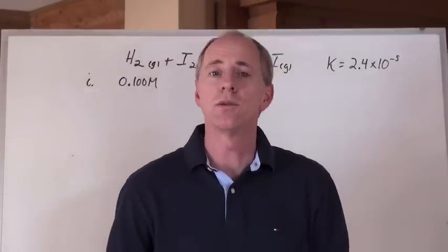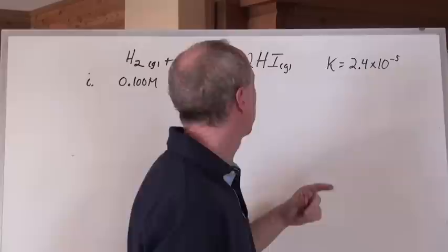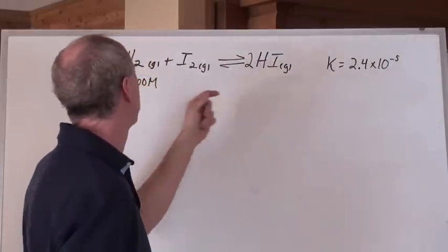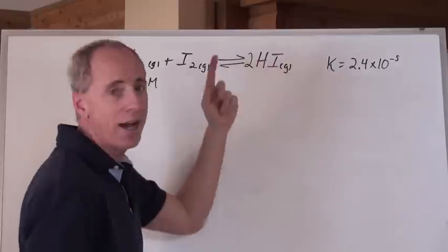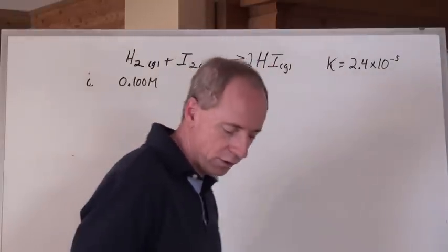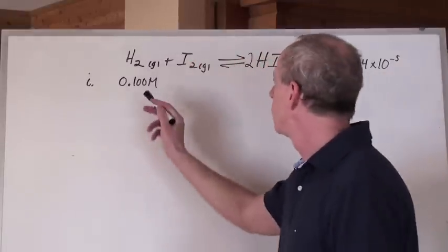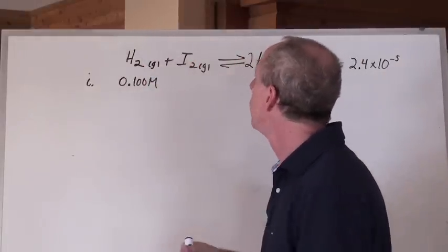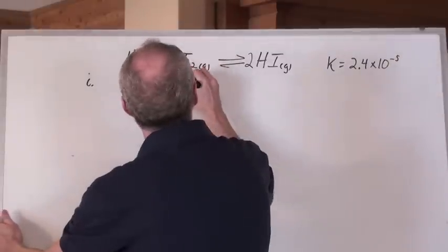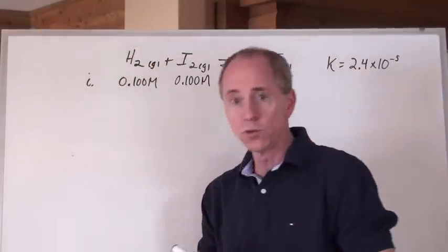So now we do a question where we already have the K value. K equals 2.4 times 10 to the negative 5 for a certain reaction right here. It's the formation of HI from its elements, balanced for 2 moles of that product. And you are told that the concentration initially of the H2, and the concentration of the I2 initially is 0.1 moles per liter each.